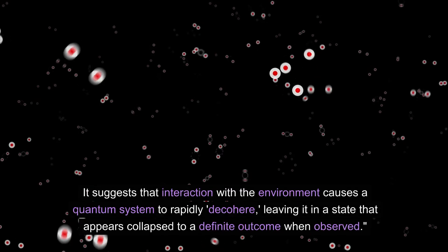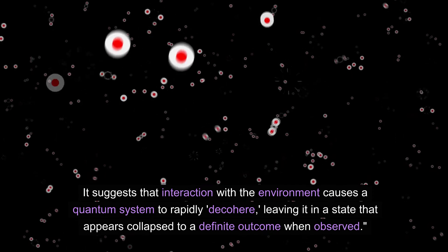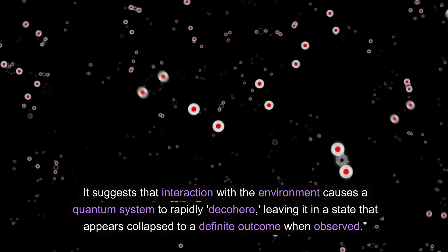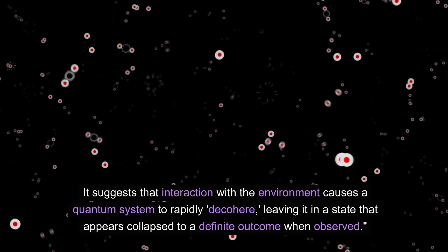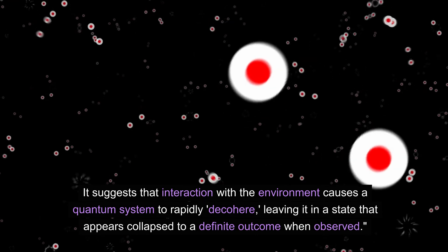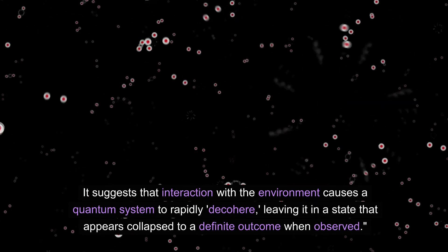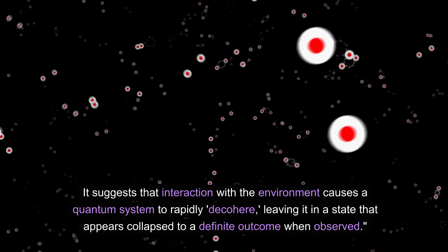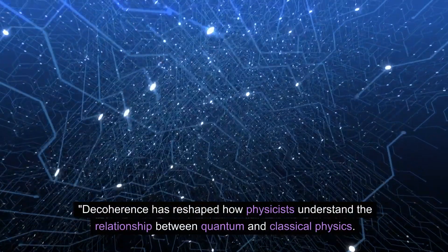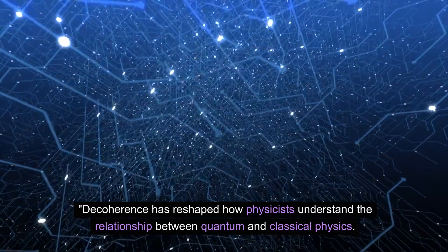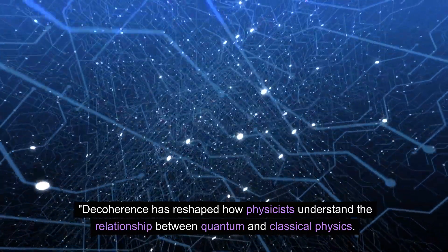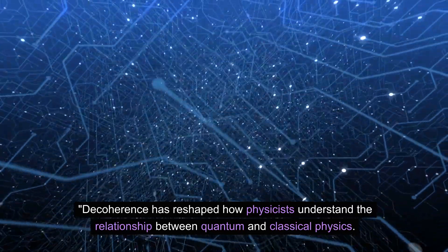It suggests that interaction with the environment causes a quantum system to rapidly decohere, leaving it in a state that appears collapsed to a definite outcome when observed. Decoherence has reshaped how physicists understand the relationship between quantum and classical physics.